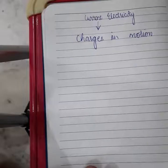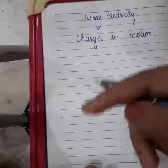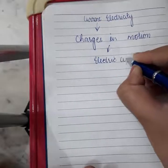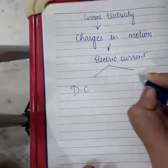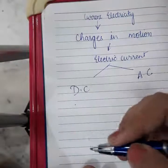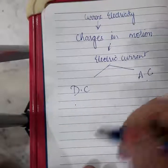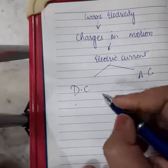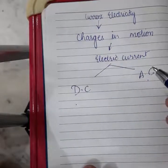Always remember that when charges are moving, they constitute electric current. Electric current is of two types: direct current and alternating current. Direct current is where charges move in only one direction, and alternating current is where charges move back and forth in the conductor. In this chapter, we will restrict our study to direct current only — when charges are moving in one particular direction.